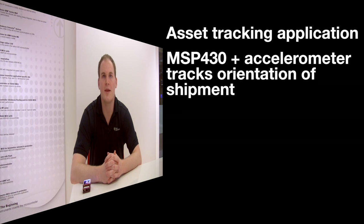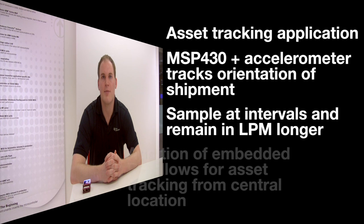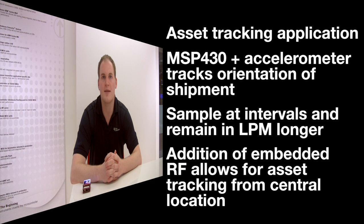By using only an accelerometer and eliminating the gyroscope, we can take samples at intervals and remain in low power modes for the majority of the time. Because of the low power involved with using an MSP430 device and the minimal use of additional components, this solution could be run on battery for shipments across the ocean. If tracking of multiple assets is required, embedded RF could be added to quickly examine all assets from a central location. This could be added to our demo using a booster pack such as the Anaren Air that offers sub-1GHz wireless.